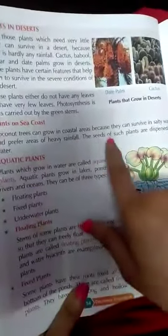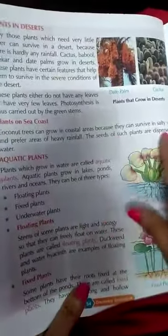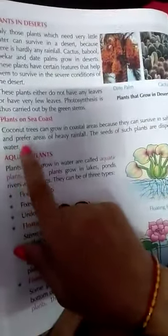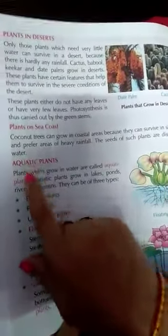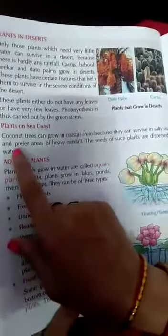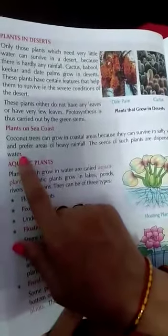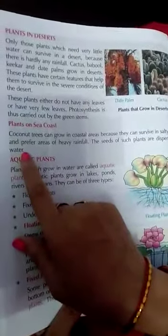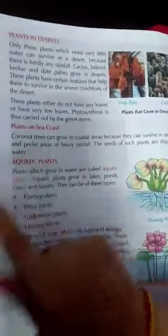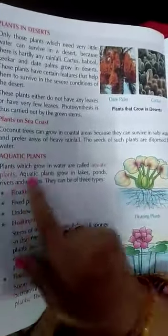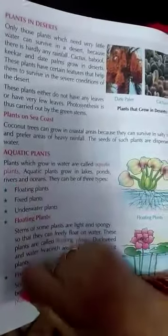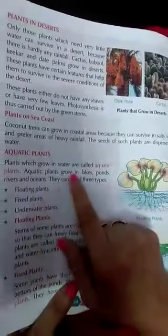The seeds of such plants are dispersed by water. Aquatic plants are the ones that grow in water.